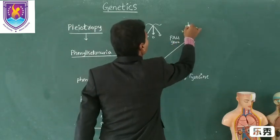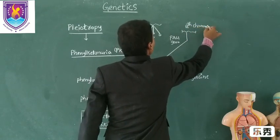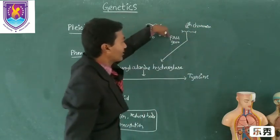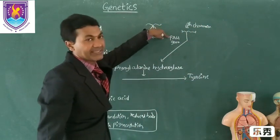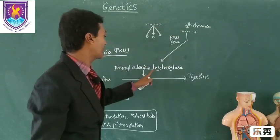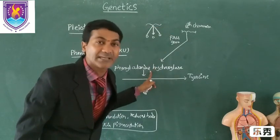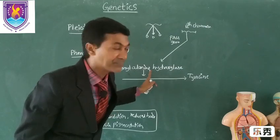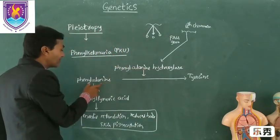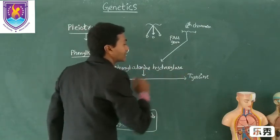This PAH gene is located on our twelfth chromosome. The twelfth chromosome has the PAH gene, which is responsible for producing the phenylalanine hydroxylase enzyme in our body. This enzyme converts phenylalanine into tyrosine.